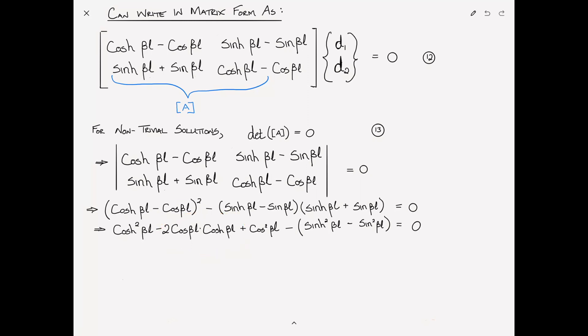So now, just rearranging things. I'm going to keep cosine βL, cosh βL on the left, and I'm going to move everything else over to the right. So, cosine βL times cosh βL is then equal to one-half times, and I'm going to group it this way, you'll see in a second why, cosh² βL - sinh² βL + cos² βL + sin² βL. Why do we do this? Well, we know cos² + sin² = 1.